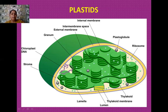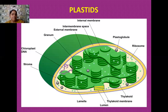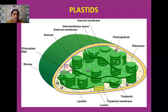Leucoplasts are further categorized into three sub-categories: amyloplasts generally store starch and are found in potatoes; elaioplasts store oils and fats; and aleuroplasts store proteins. The number of plastids may vary in different types of cells — for example, in the alga Chlamydomonas a single chloroplast is present, but in mesophyll cells of complex green algae the number may be 20 to 40 or more.